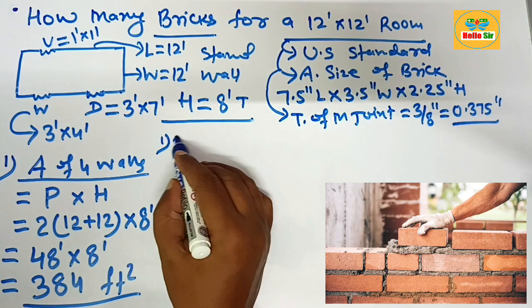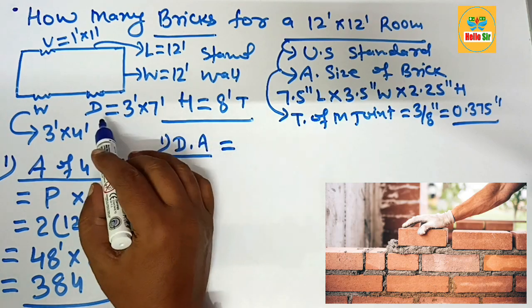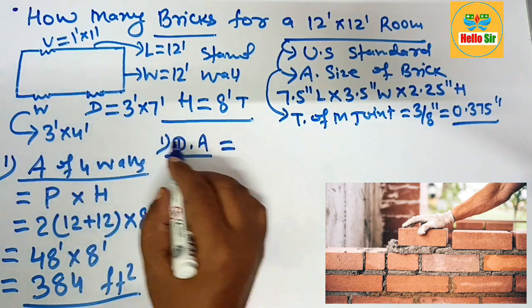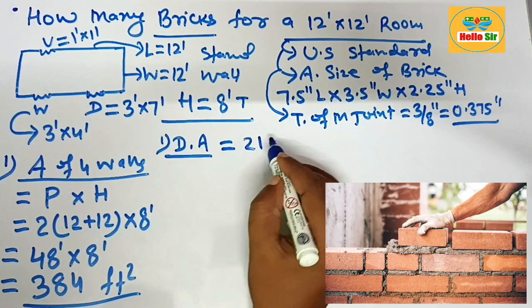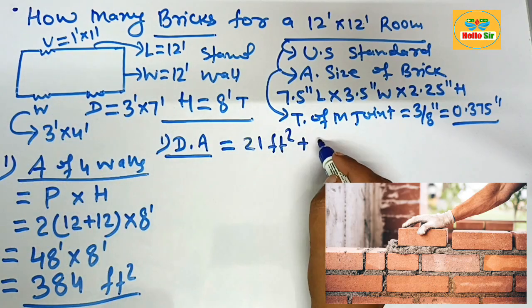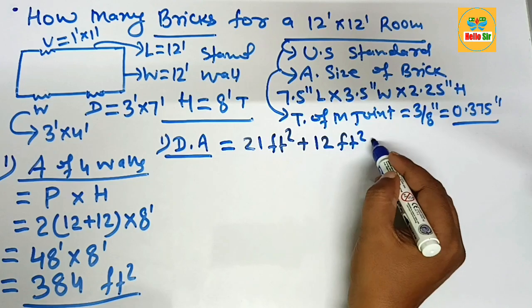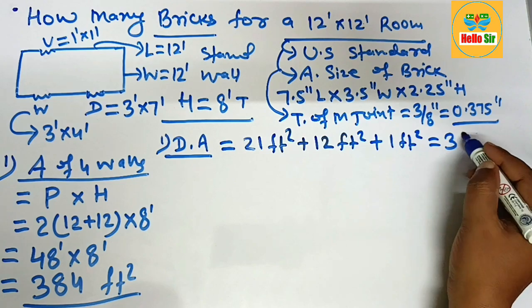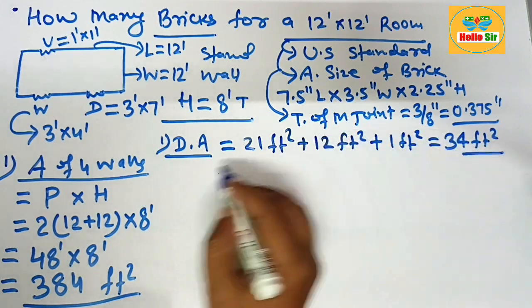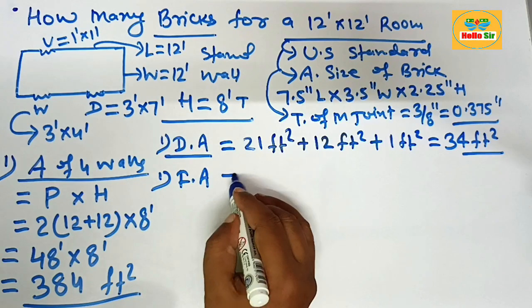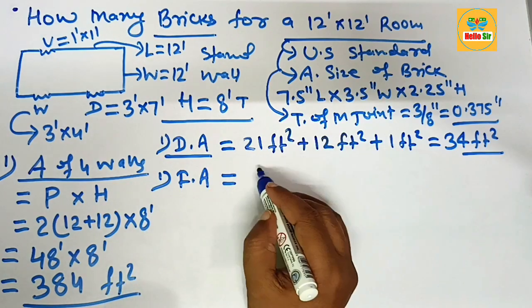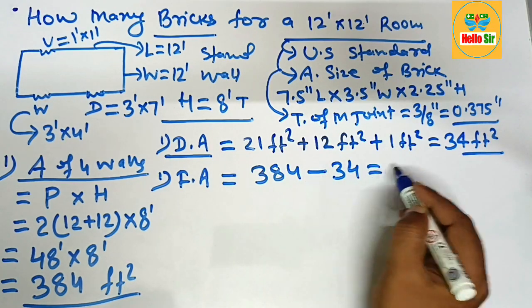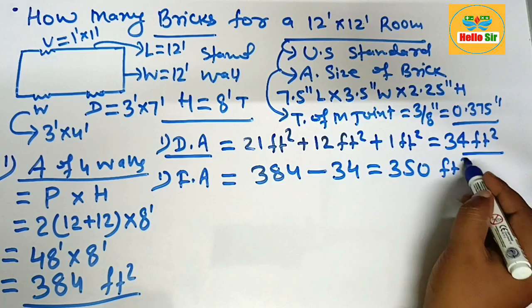Now deduct the reduction area — the areas that do not require brick work. The door area is 3 by 7, that is 21 square foot. The window area is 3 by 4, that is 12 square foot, and the vent area is 1 square foot. Adding all these together gives 34 square foot. Subtracting 34 from 384 gives a final area of 350 square foot that requires brick work.